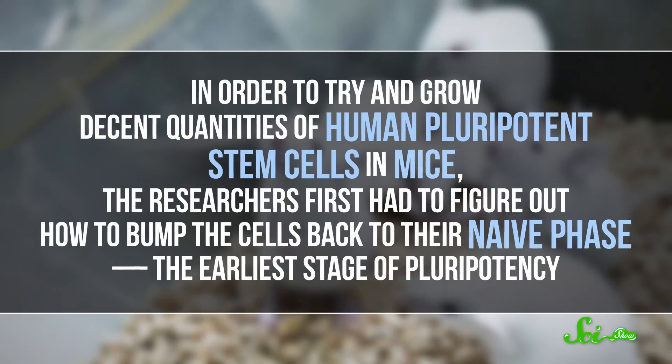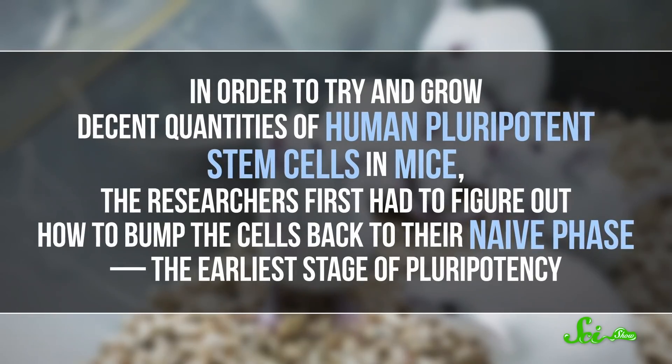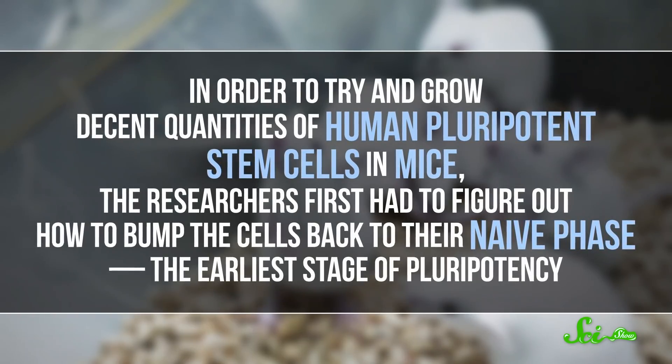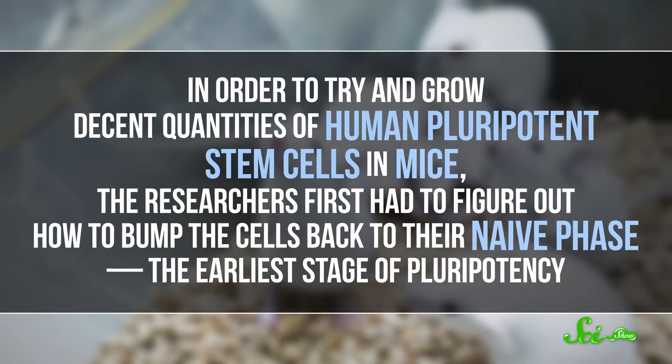But in order to effectively grow human stem cells for research purposes, you have to grow a lot of them. But a 2020 study may have found the solution to that problem. In order to try and grow decent quantities of human pluripotent stem cells in mice, the researchers first had to figure out how to bump the cells back to their naive phase, the earliest stage of pluripotency.